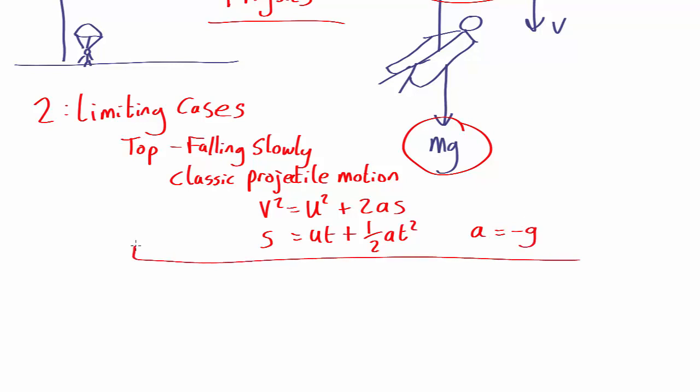So we know how to deal with the first limiting case when you're just starting to fall. But then as you fall faster and faster, the wind drag will get larger and larger.